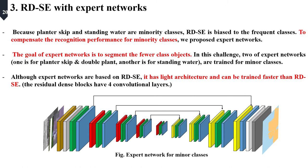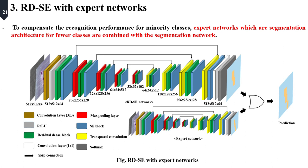To compensate the recognition performance for minority classes, we propose expert networks. The goal of expert networks is to segment the rare classes. In these challenges, two expert networks are trained for minority classes. Although expert networks are based on RDSE, they have a different architecture. This figure shows the overall architecture of the proposed method. When the base model predicts minority classes, expert networks are activated, and the prediction results from each network are combined. The final prediction is used for agricultural pattern recognition.